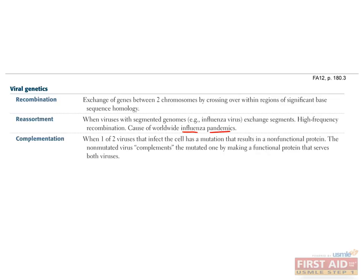Complementation occurs when one virus rescues a defective mutant strain of virus that is missing a gene for an enzyme or factor necessary for replication. The two viruses co-replicate together, with the rescuer virus supplying the missing factor or protein to the defective virus. The defective virus is now able to replicate and form progeny, but the progeny of this mutant virus will also lack the same gene and won't be able to replicate unless they too are rescued.